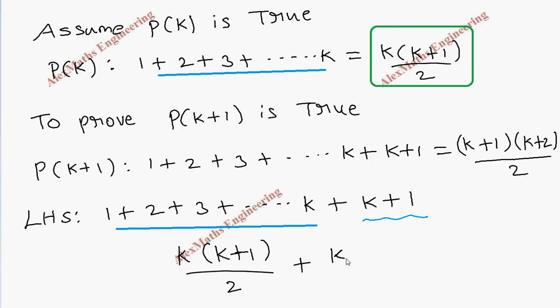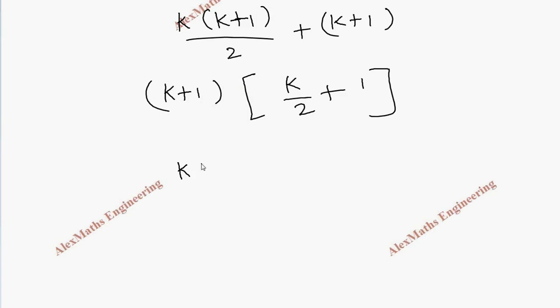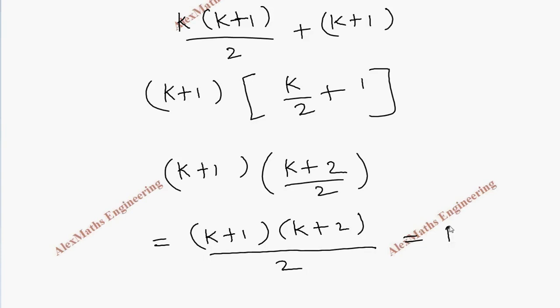From the entire expression, we can take k+1 common, so the remaining is k/2, and when this is taken common, we're left with 1. Taking LCM, we have (k+1)(k+2)/2.